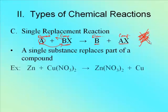Here's an example: zinc plus copper nitrate yields zinc nitrate plus copper. The single substance is zinc — it bumped out the copper. How do we know? Looking at the product side, the zinc is with the nitrate and the copper is out by itself. There's actually an easier way to figure this out.